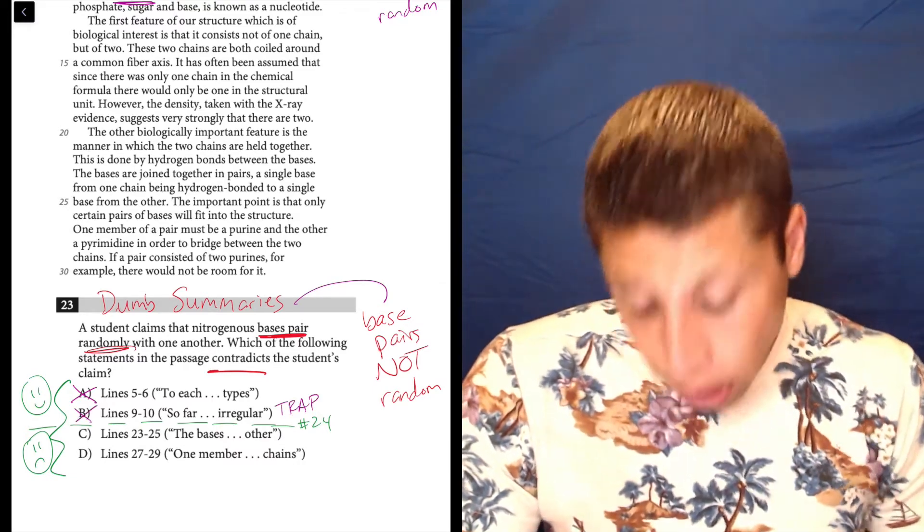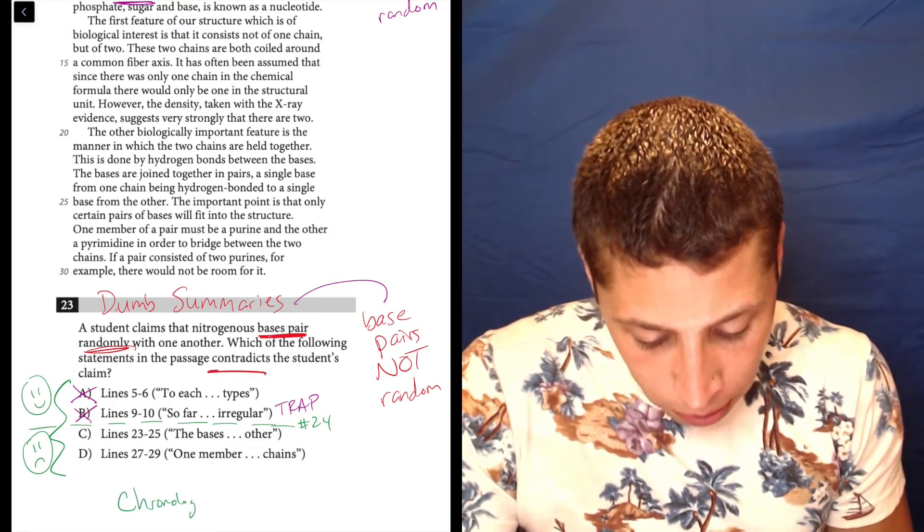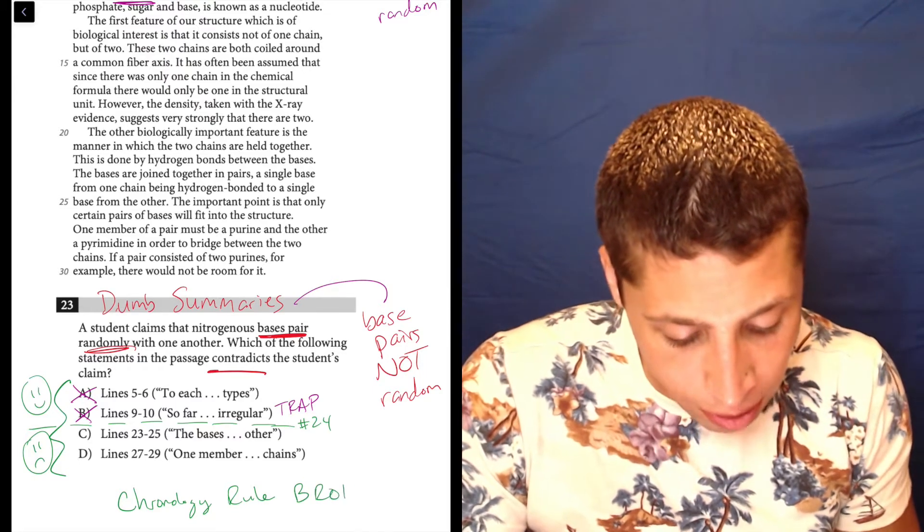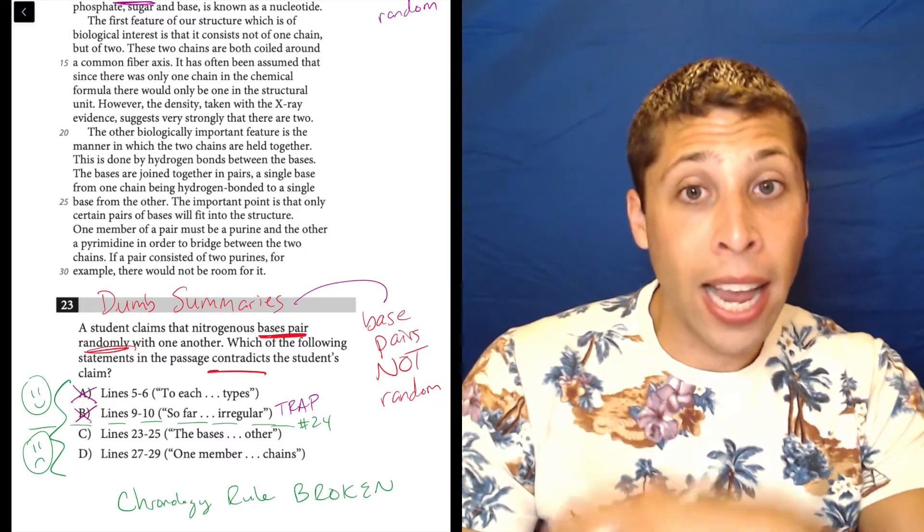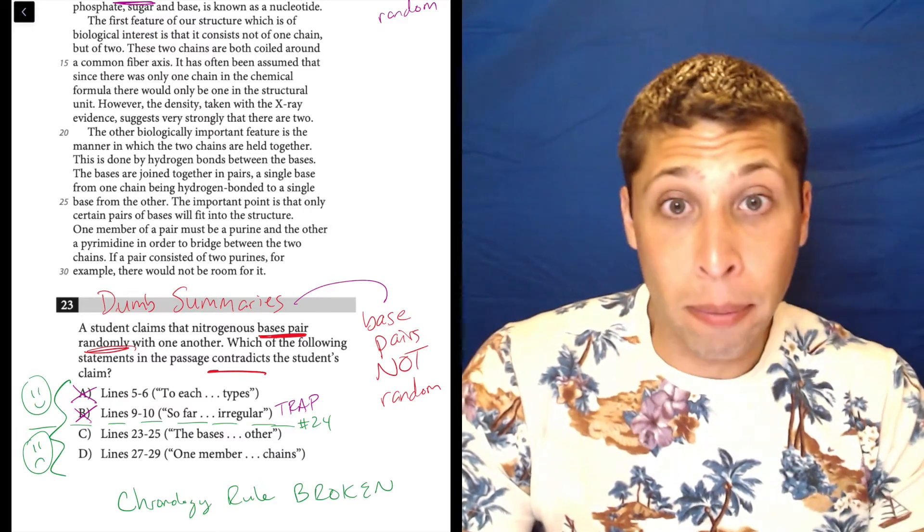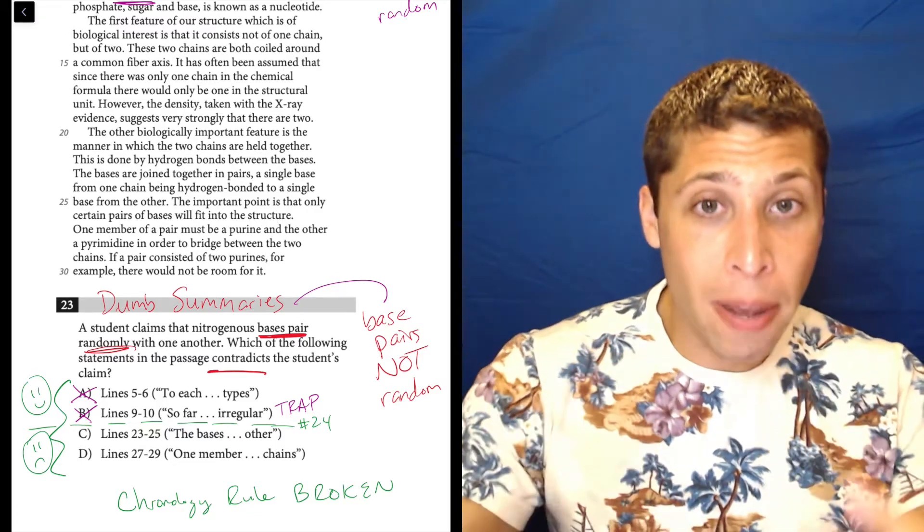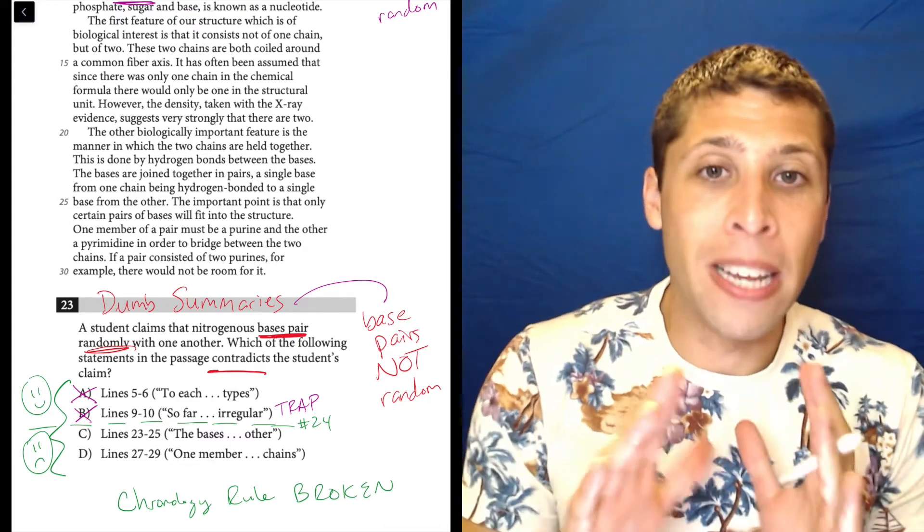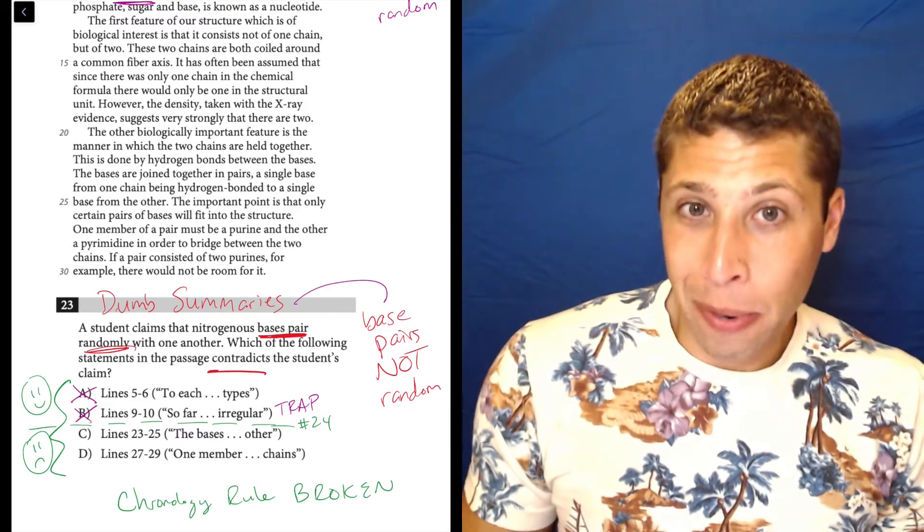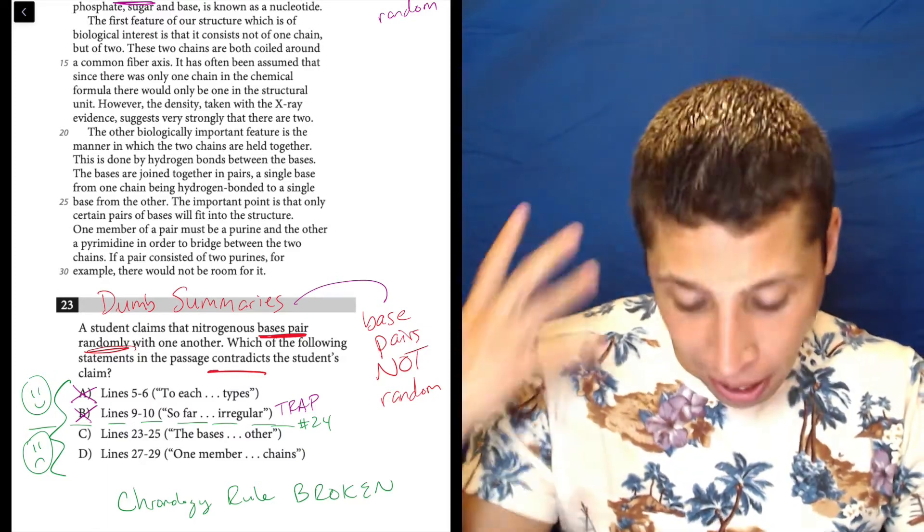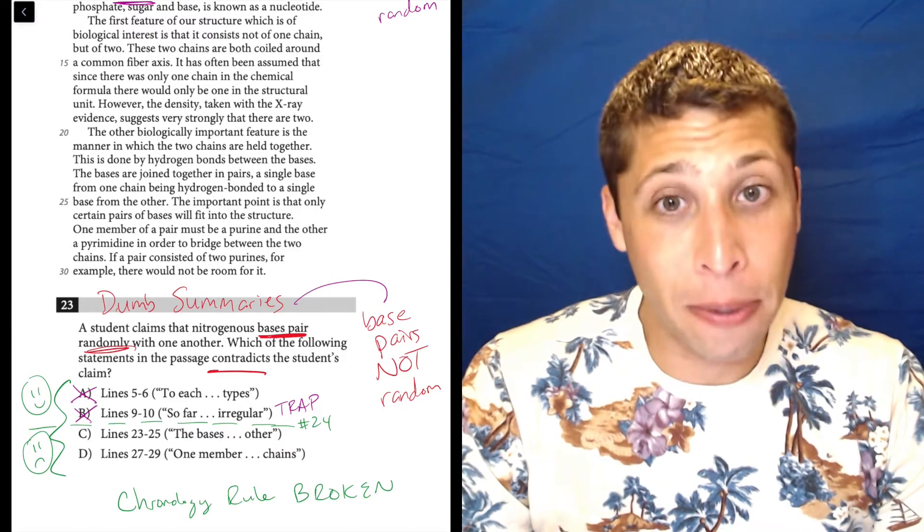And if we catch it, now look what happens. We've eliminated the two choices that the chronology rule suggested was going to be right. So here's a good example of why I like the chronology rule even though it gets broken from time to time. I have no doubt that A and B are wrong. If I were on the fence and I had to guess on this question randomly, I would have guessed randomly A or B. Because the chronology rule makes it seem like those are going to be right. But I'm not guessing randomly on most questions. Sometimes they break it. And a lot of times when they break it, we are so confident that it's broken that we don't care that it's broken.